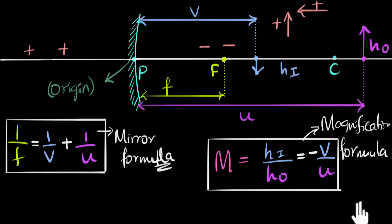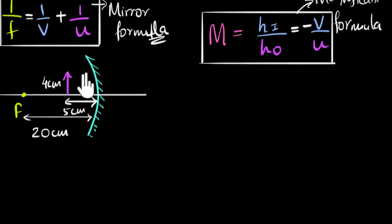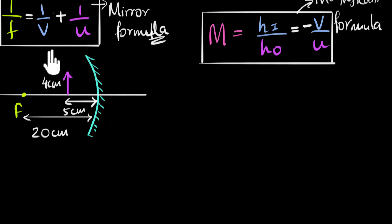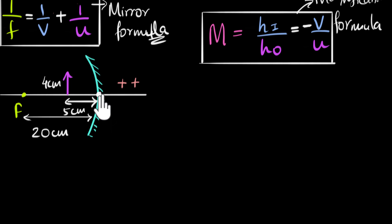Let's take a couple of examples to get the hang of this. We have an object in front of a concave mirror. We know the object distance and the focal length, and we need to find the image distance using the mirror formula with signs. First, we find our origin — it's always the pole. The incident direction is towards the right, so the right side is positive and the left side is negative.